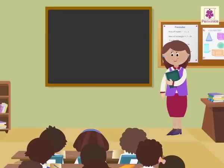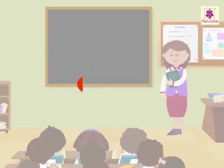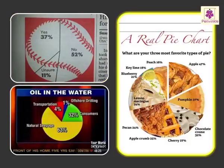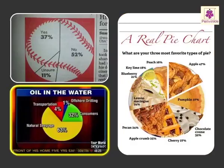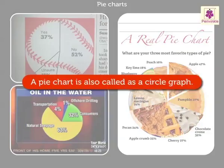Hello friends! Today let us learn one more way of data representation called pie chart. Many a times you all must have come across data represented in circular form in newspapers, magazines, or on the television. These are called pie charts. A pie chart is also called a circle graph.